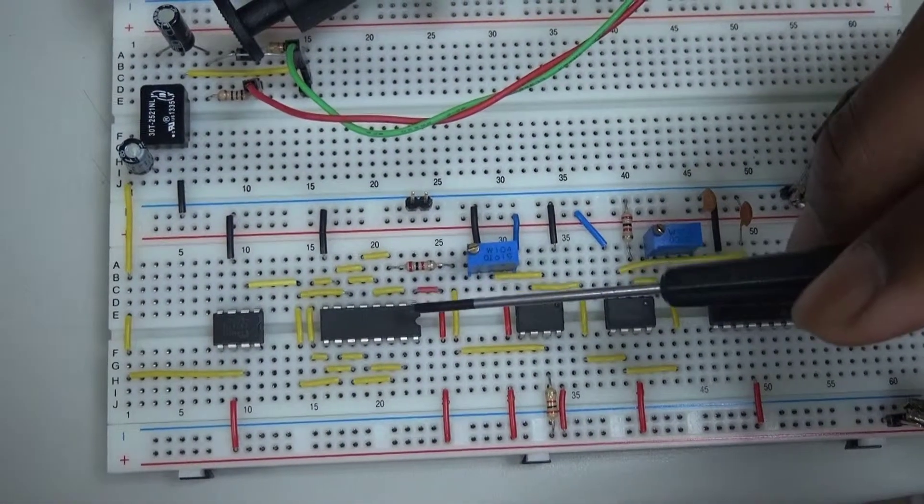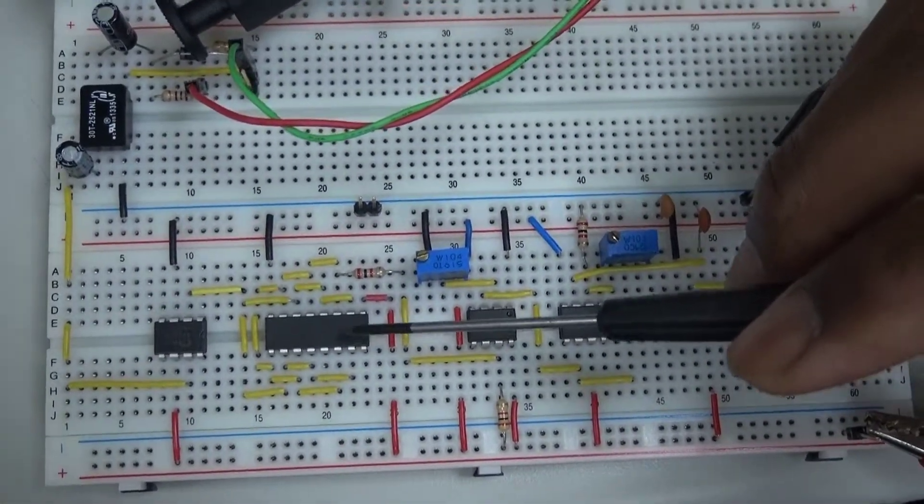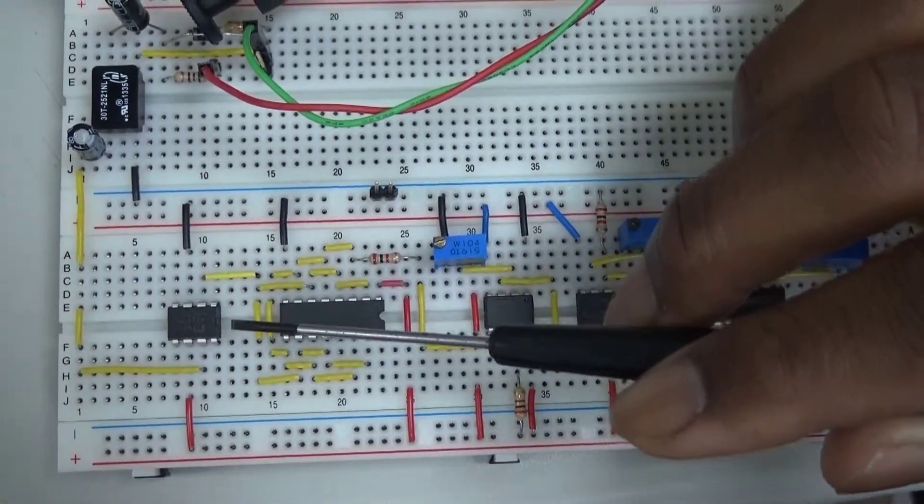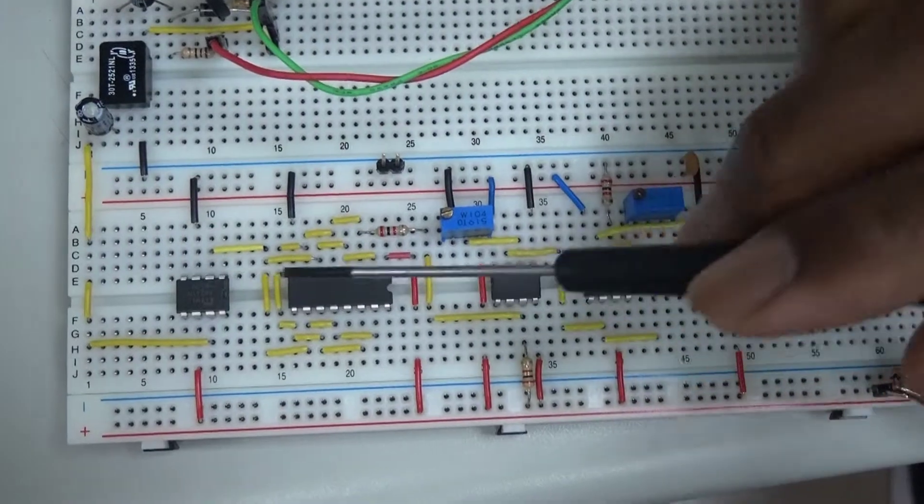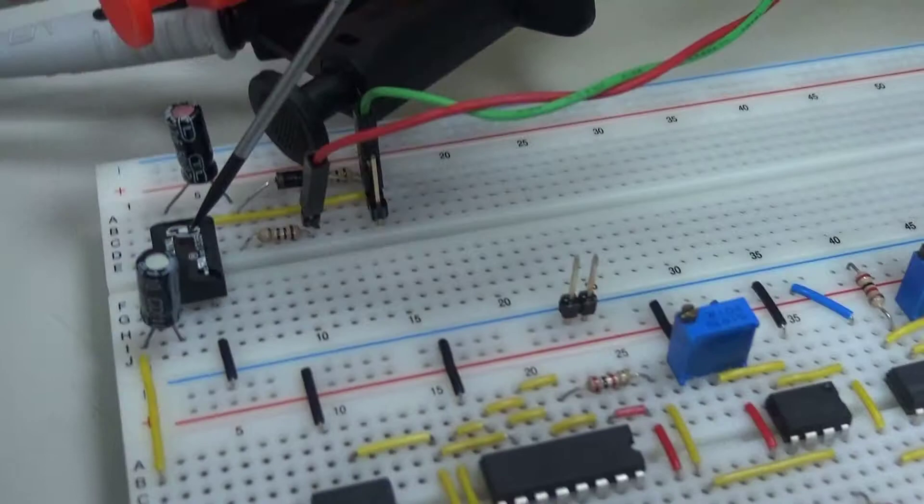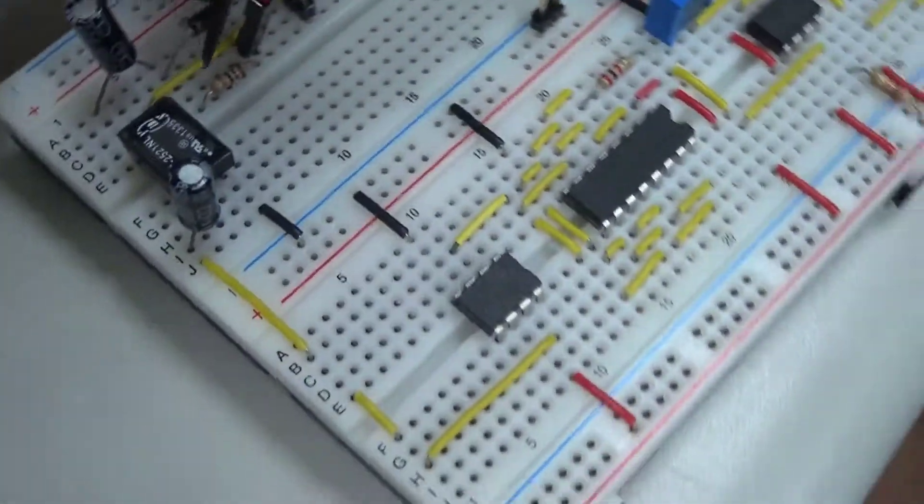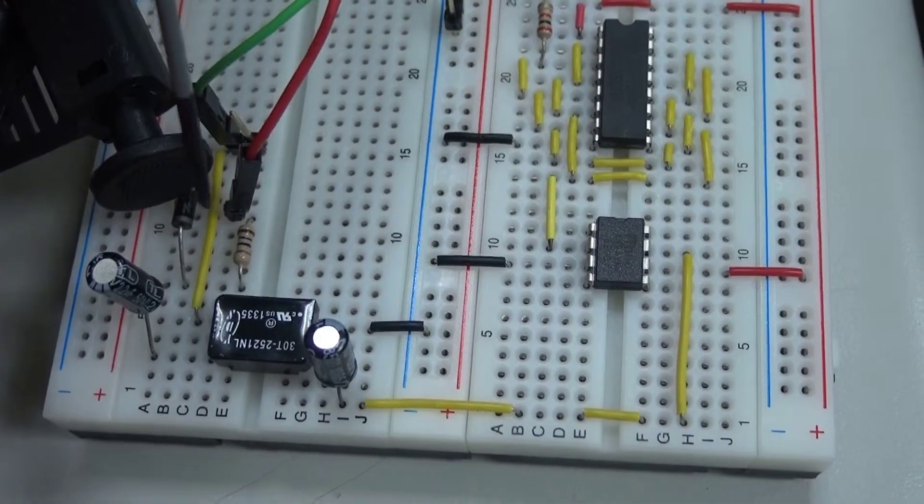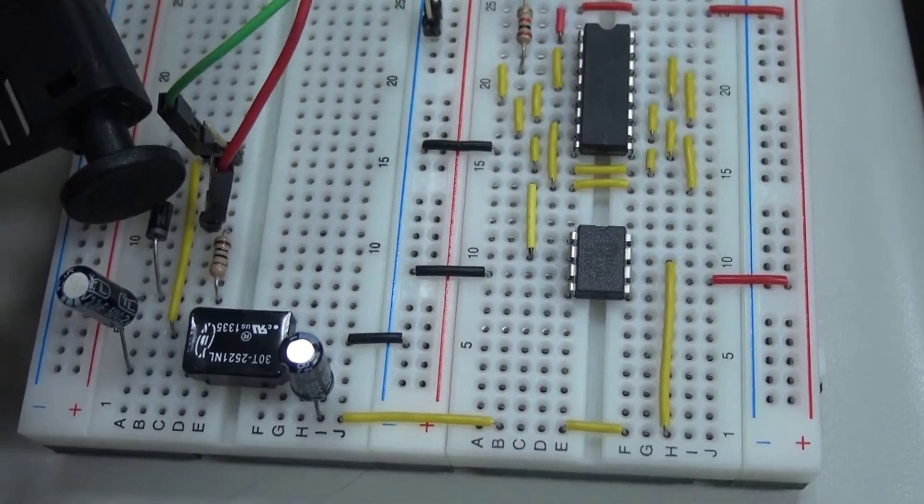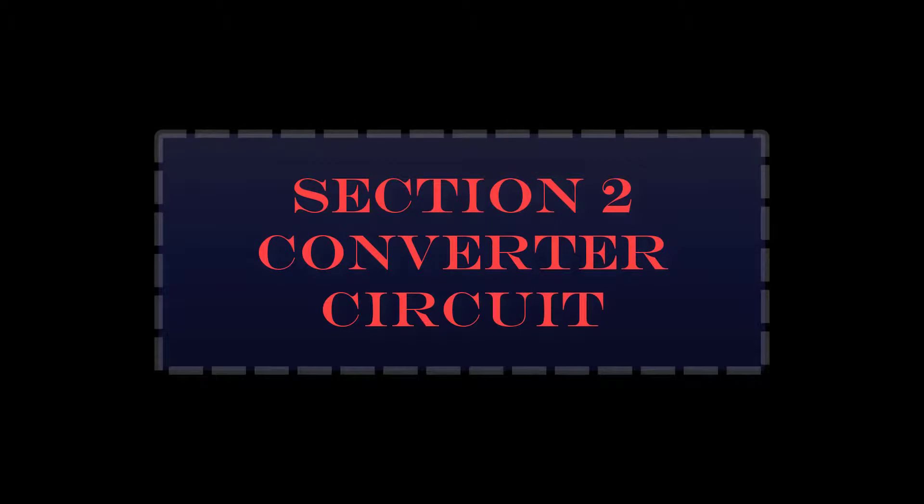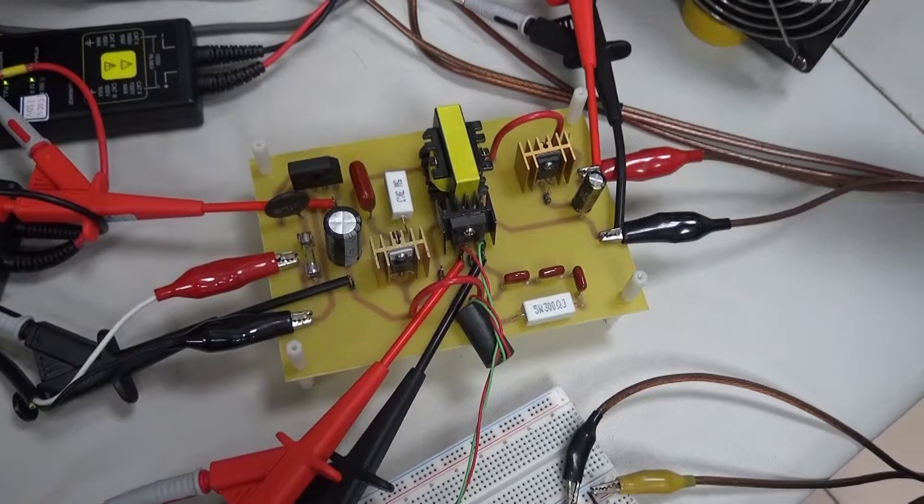The PWM signal then goes into the CD4050 located here, which is used in combination with the MIC4424 located here, to increase our drive current. Finally, we have our isolated driving circuit, a pulse transformer, in combination with some passive components, which is used to provide some isolation between our control circuit and our converter.